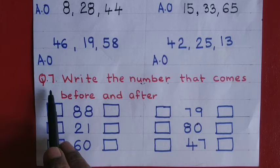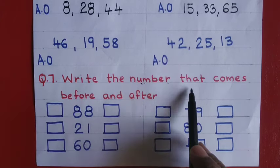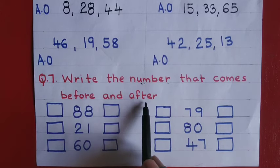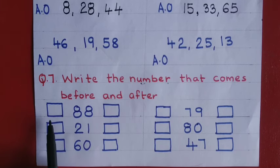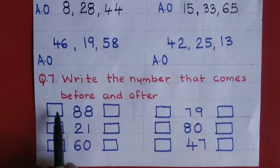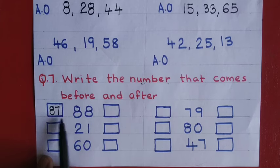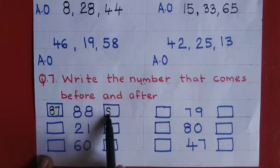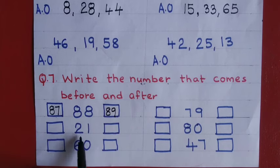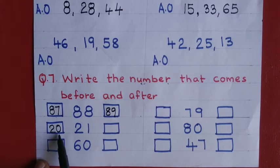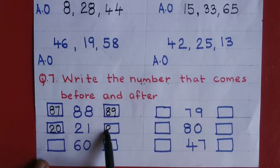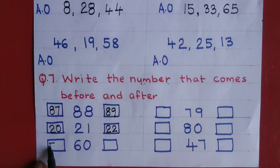Question number seven: write the number that comes before and after. The middle number is given and you write the before and after numbers. For eighty eight: eighty seven, eighty eight, eighty nine. For twenty one: twenty, twenty one, twenty two. For sixty: fifty nine, sixty, sixty one.